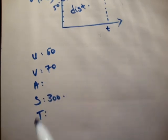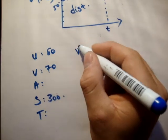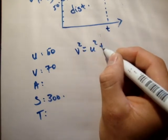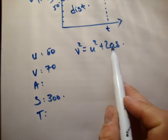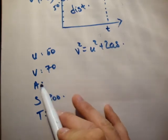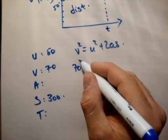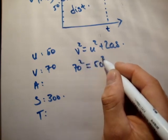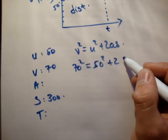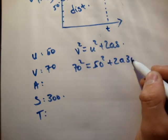v squared is equal to u squared plus 2as. So let's try that. v squared equals u squared plus 2as. The only part we don't know is a. So that's perfect.